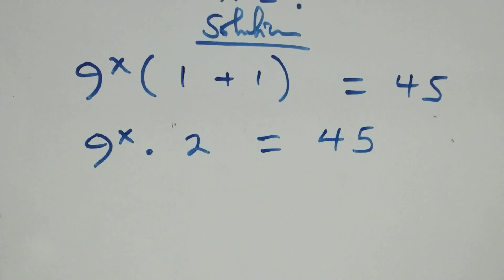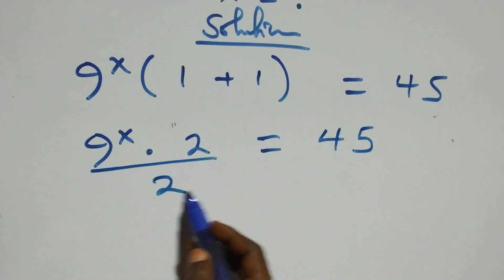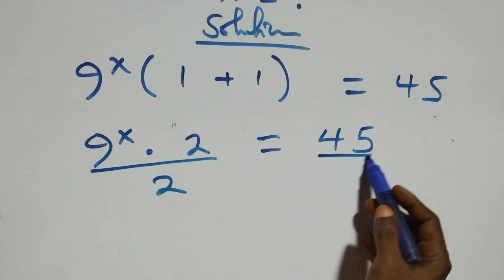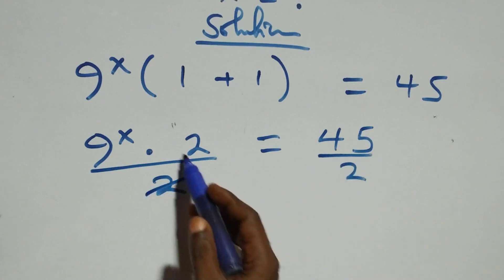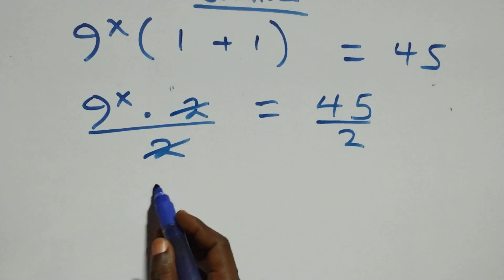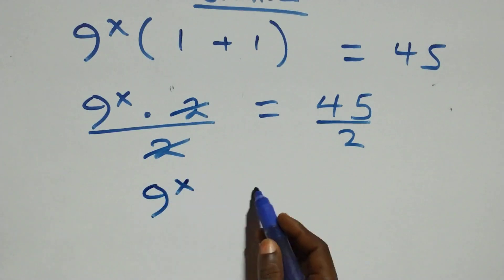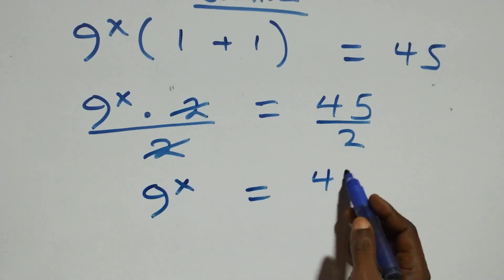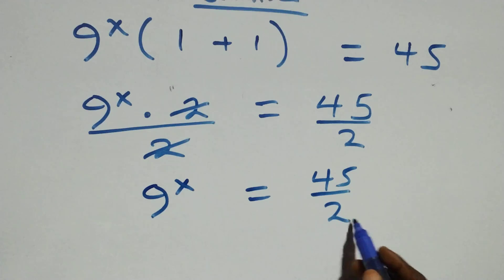The next step here, we divide both sides by 2 — divide this side by 2, also divide this side by 2. The 2s cancel each other. We have 9 raised to power x equals to 45 over 2.